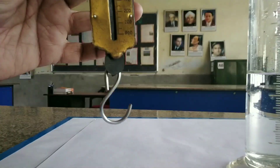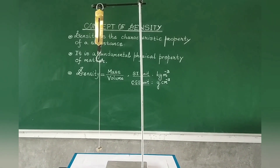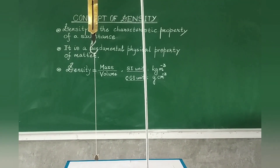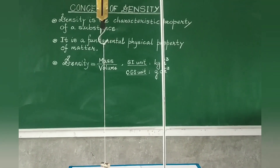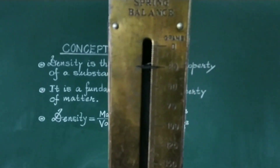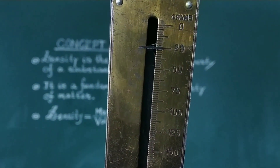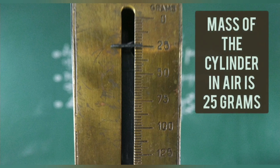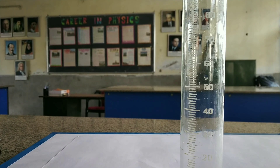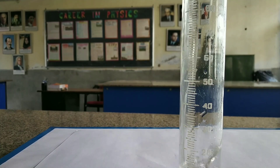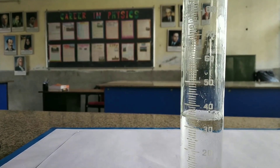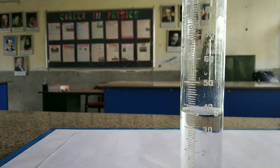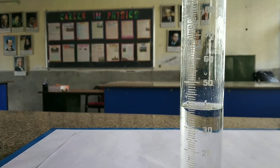Initially we need to hang the spring balance on a clamp stand and then tie the metallic cylinder and suspend it on the hook of the spring balance. The mass of the cylinder in air can be measured using the spring balance. The eye should be at the same level as that of the pointer. The reading suggests that the mass of the cylinder is 25 grams. We need to ensure that the metallic cylinder is clean and dry.